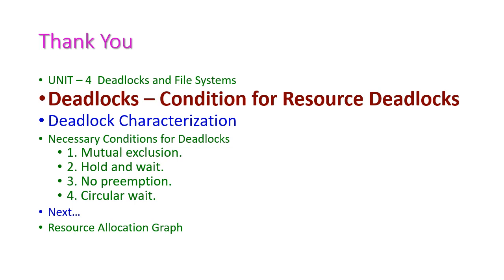Up to this point, we have seen the conditions for resource deadlock. The necessary conditions for deadlock are mutual exclusion, hold and wait, no preemption, and circular wait. In the next class, we will see the resource allocation graph in detail. Thank you.